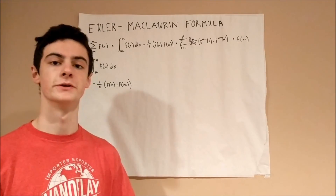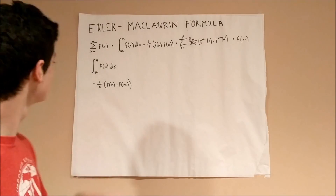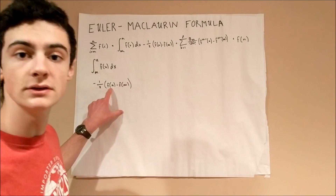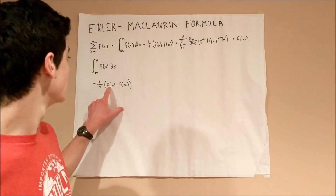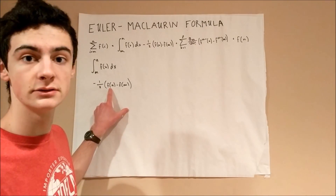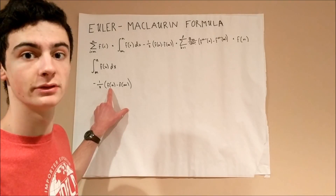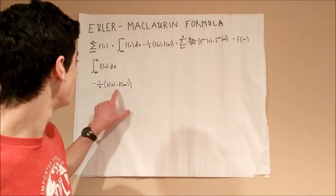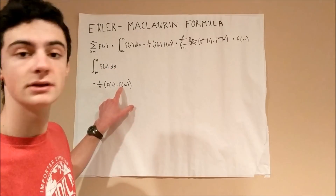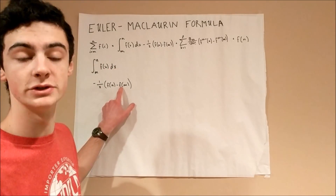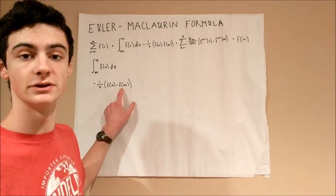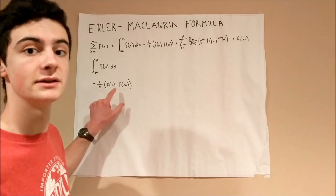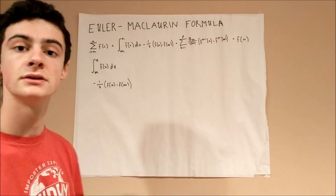Let's look at the second component. This is the quantity f(n) — your function with the upper limit plugged in — minus f(m), which is your function with the lower limit plugged in. That difference is then multiplied by negative one-half.